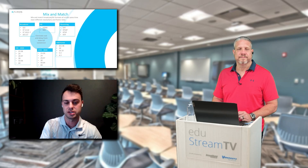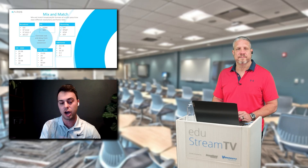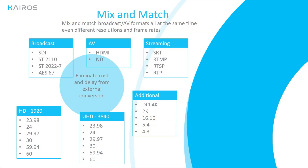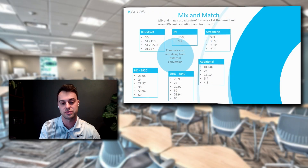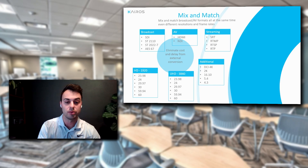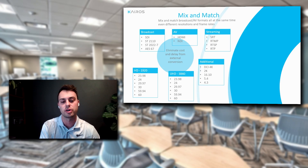Not only can I output different resolutions on a per-output basis, but inputs coming into the system can also be mixed and matched. It doesn't matter whether I'm bringing in SDI, 2110, NDI, or SRT — K-Rose will take it in without requiring up-down cross-converters or additional hardware. That saves on reliability, reduces additional hardware costs, and makes it far more affordable to use the formats that people are already used to using.